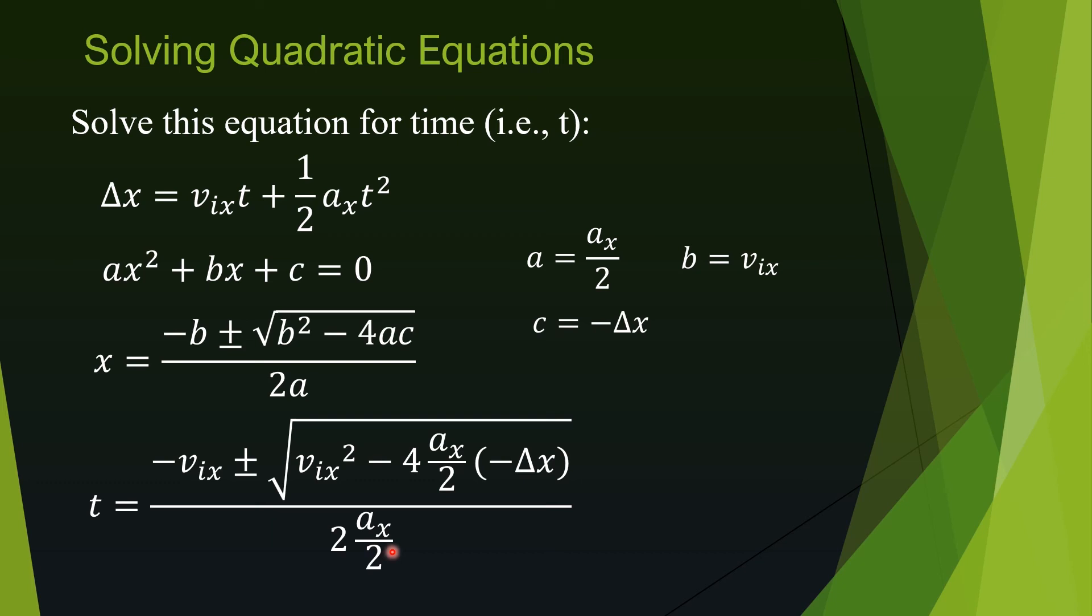When your quadratic equation has numbers for all these coefficients, or for some coefficients, it becomes simple. And it is simply arithmetic. Just a reminder, a quadratic equation has two solutions. You get one solution by using only the positive sign. Another solution by simply using the negative sign from here.